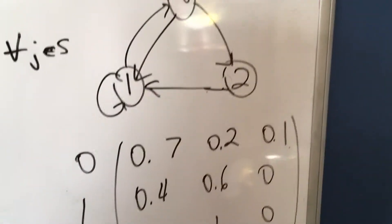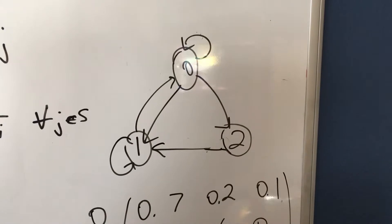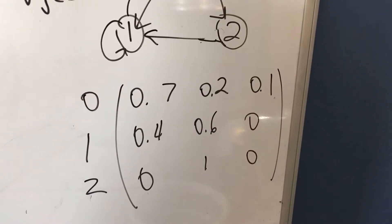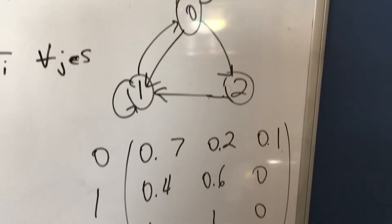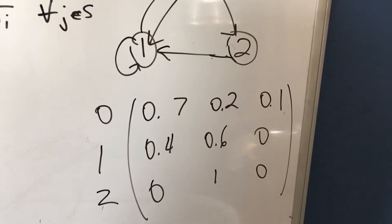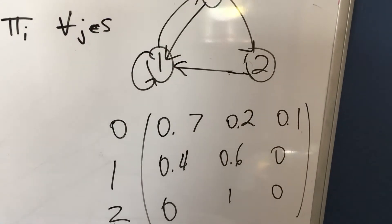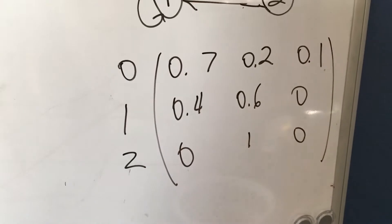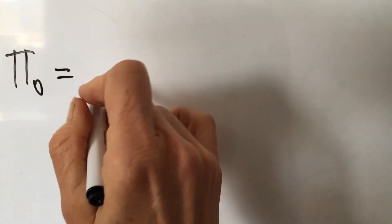Let's take this example: a three-state system with a three-step transition matrix. Here's our transition matrix, and we want to calculate the long-term probability of being in any one of those states. We're going to start off with pi of 0. The probabilities of transitioning into state 0 are all going to be in this first column, so we just read it off.